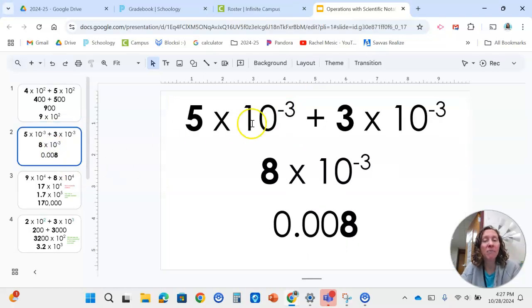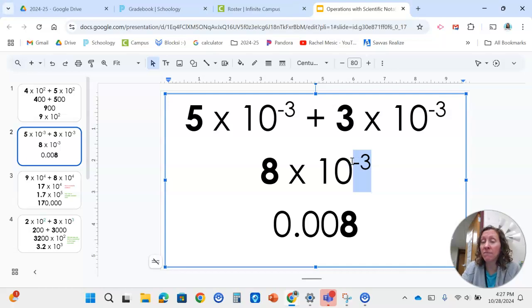For this one, if we have the same exponent, then we keep the exponent and we add the coefficients. So 5 plus 3 would be 8. And then if we write it in standard form, we would shift that decimal 3 to the left and we end up with 8,000.